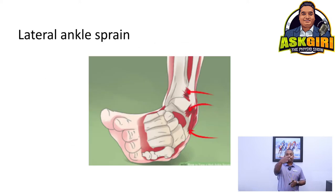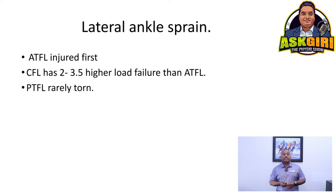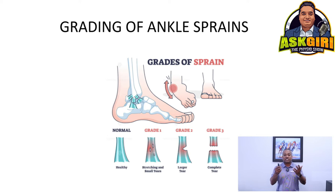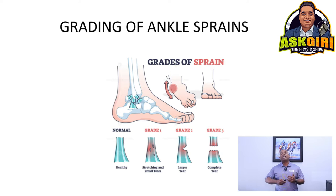In a lateral ankle sprain, you roll the ankle and strain the ligaments. The most commonly injured is the anterior talofibular ligament at the front of the ankle. The calcaneofibular ligament can take two to three times more load. The posterior talofibular ligament is least commonly affected. Grading: grade 1 is a stretch with microscopic tears; grade 2 is a partial tear; grade 3 is a complete tear. Even a complete tear can recover with proper conservative rehabilitation.